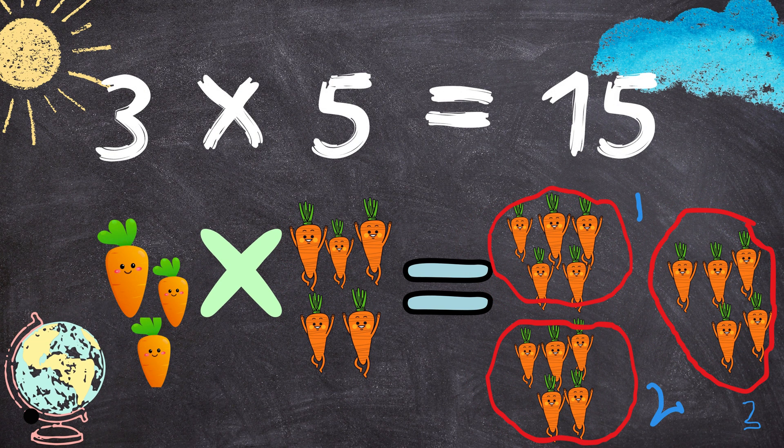Three times five equals to fifteen. Three carats multiplied by five carats equals to fifteen carats.